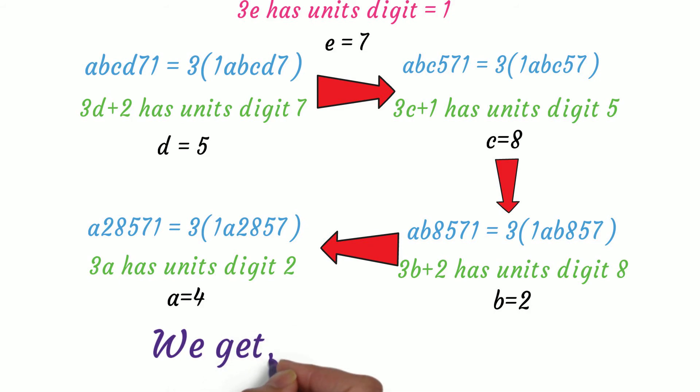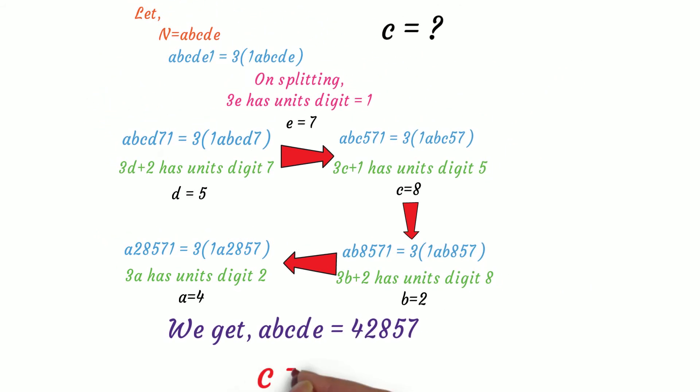From all these steps, we get our number to be 42857. And this gives c equals 8. Thank you.